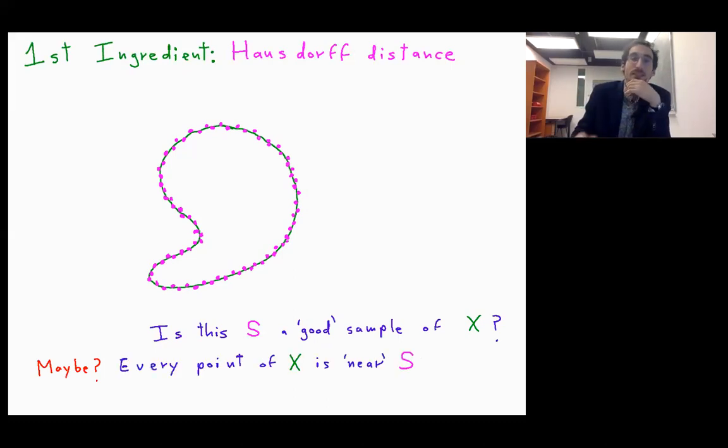And maybe, because we can see that every point in X is near S and at the same time every point of S is near X.